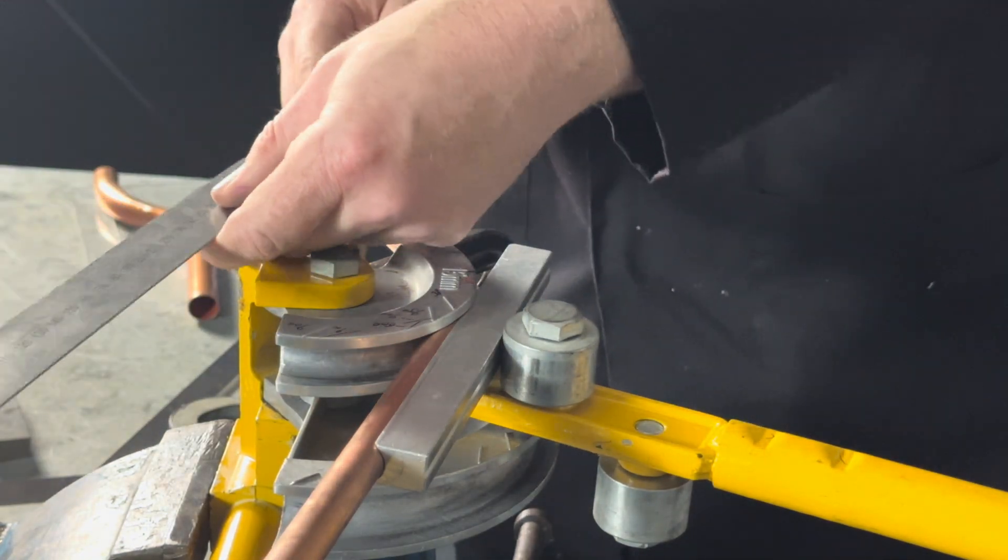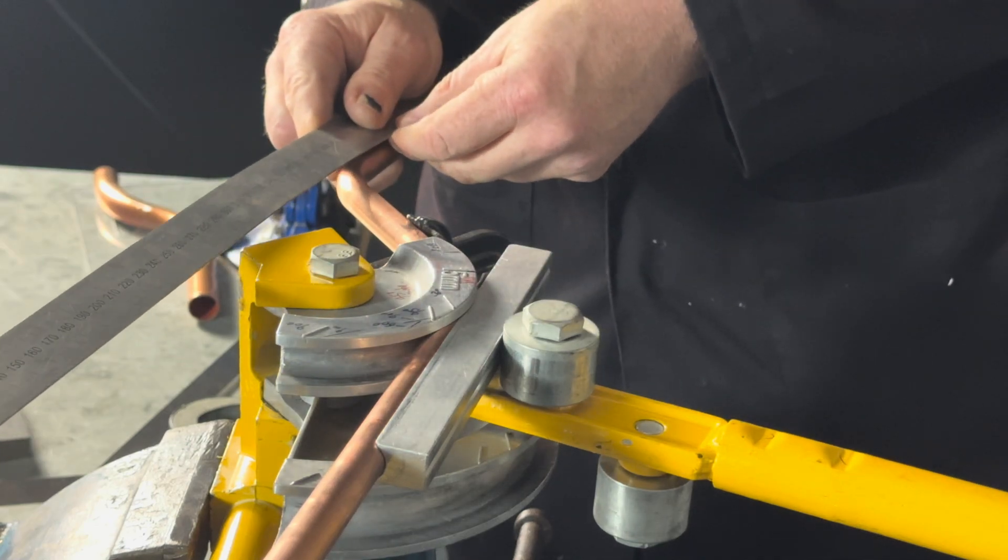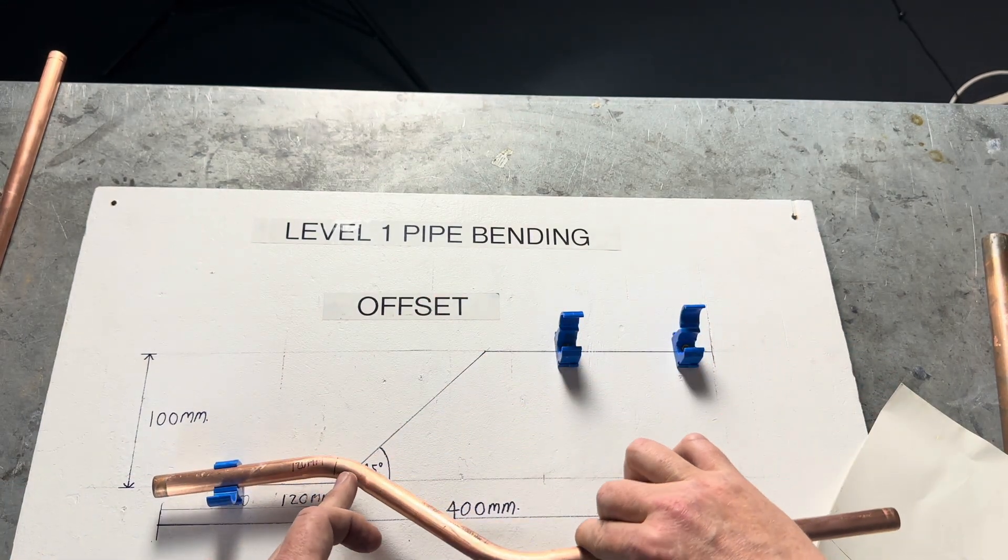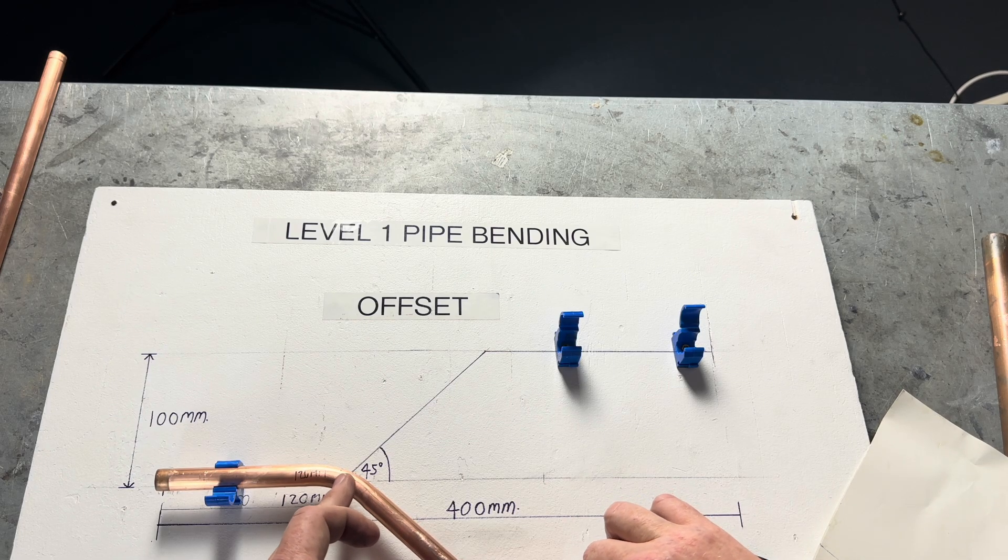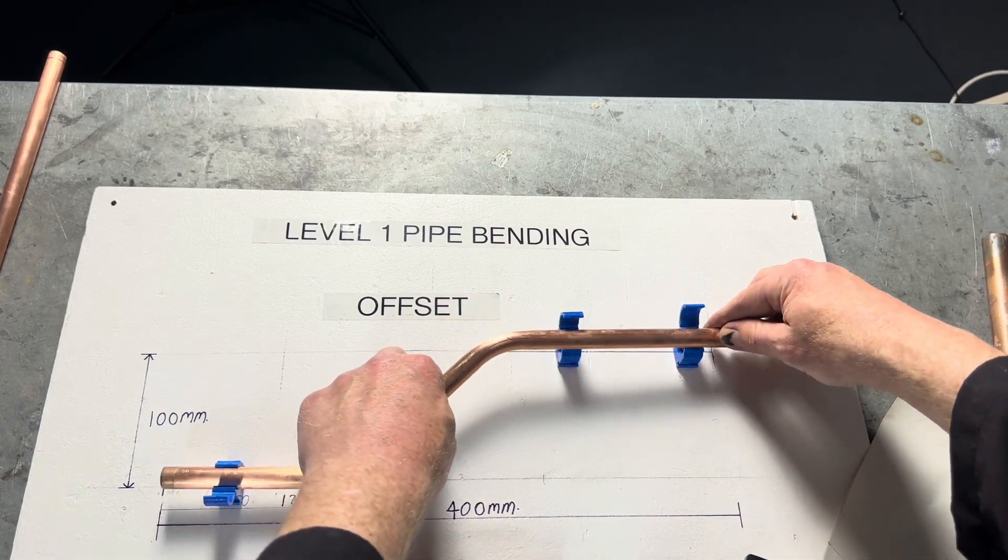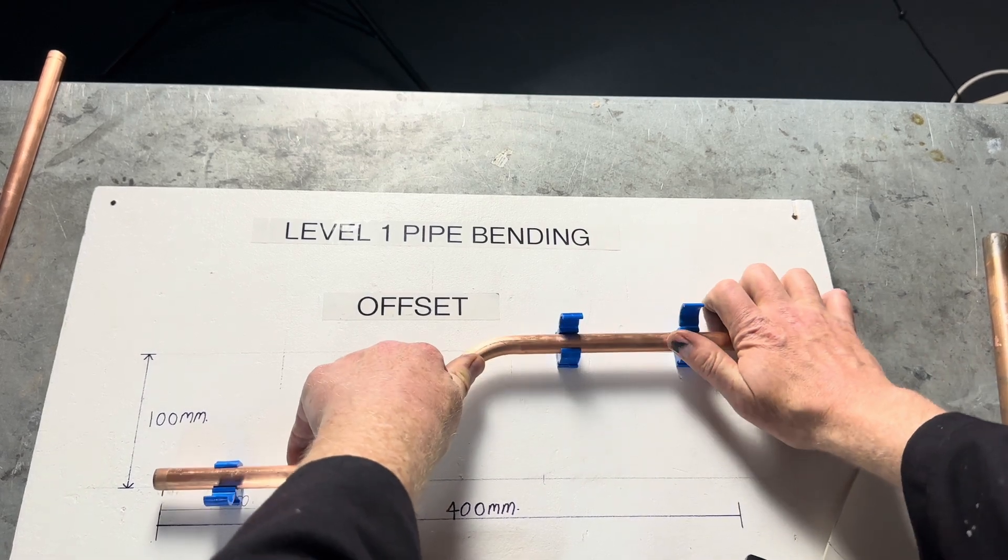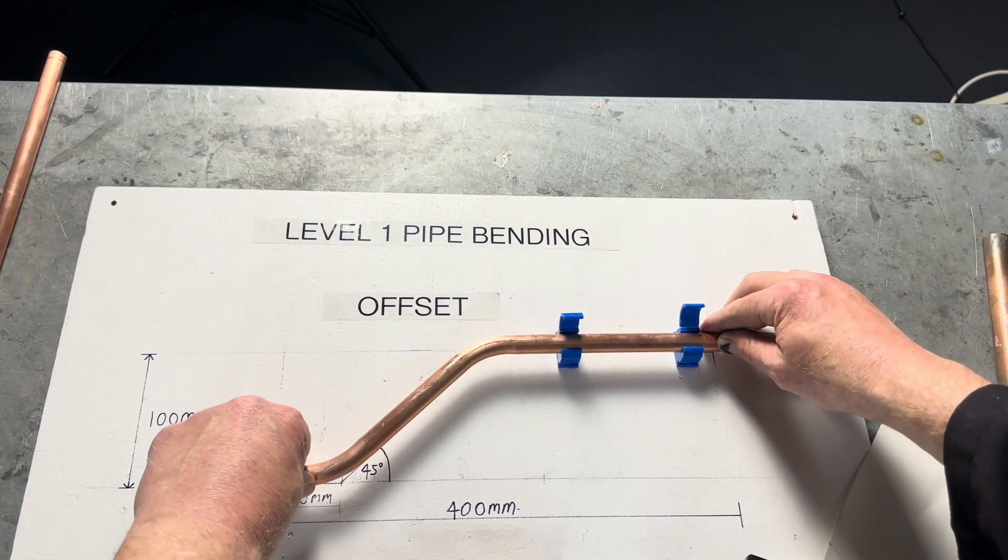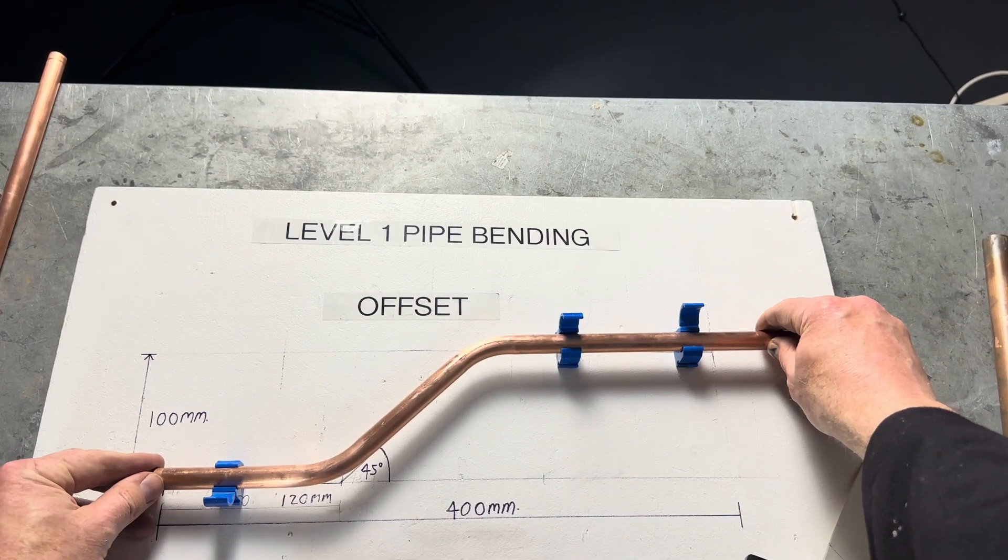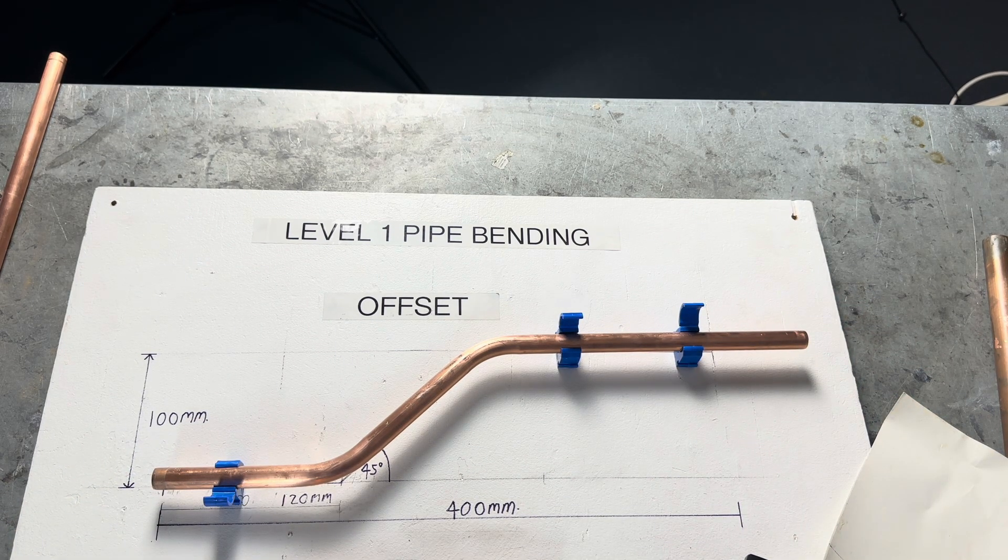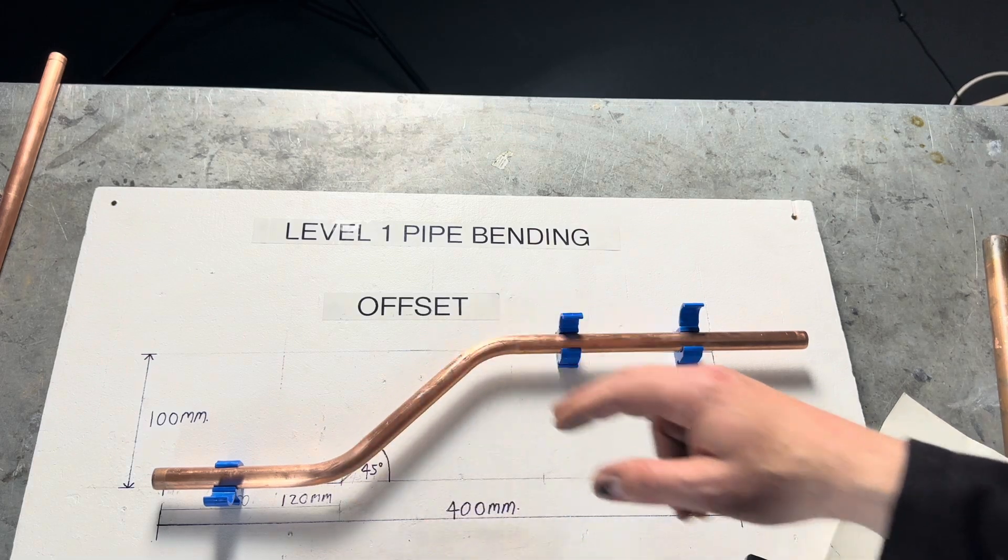You can also check it with a ruler going across like that. Jig, pipe in. So that's lining up there. See my centre mark there. That's lining up nicely. So the proof is in the pudding. It fits into the jig.